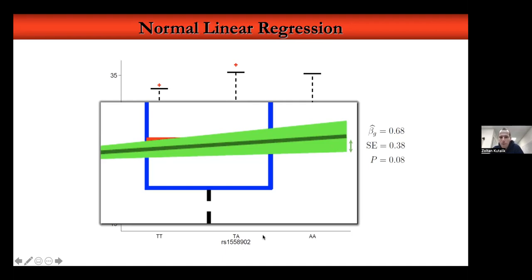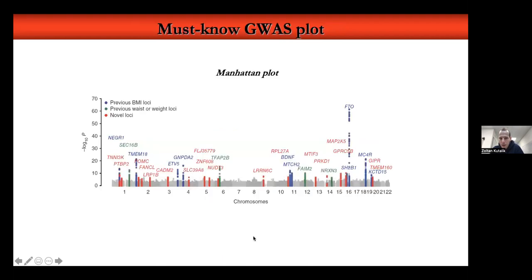This is quite discouraging because it's a sample of almost 6,000 people and this variant has the largest effect on obesity, yet we still can't pick it up. If you correct for covariates like age, sex, physical activity, and diet, then this can actually become significant, around 10 to the minus 4.